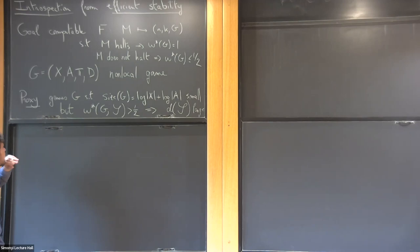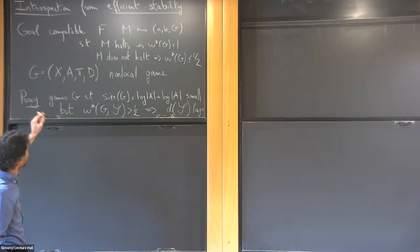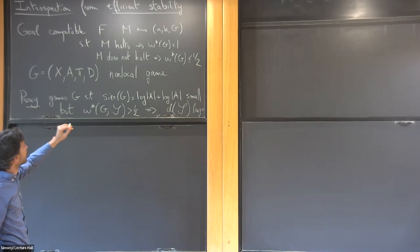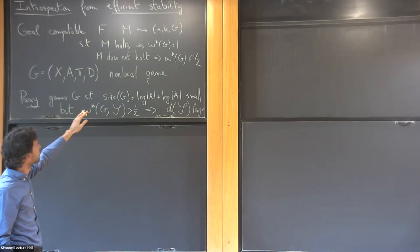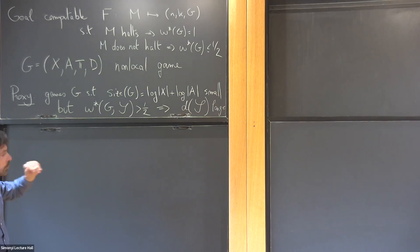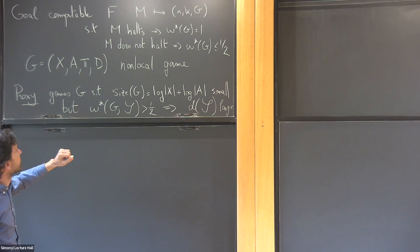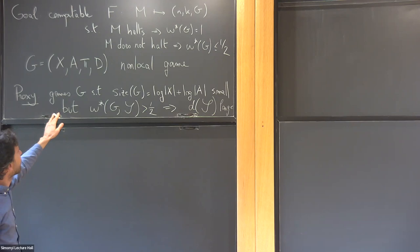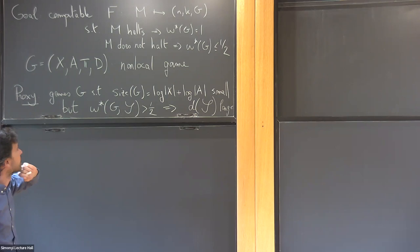If you remember from the end of the first lecture, the goal was to design a computable function — this function maps Turing machines to triples of integers n, k. This used to be a linear function, but last time we saw we're going to construct these linear functions as normal games, where k are parameters representing the number of questions and answers. This needs to be a reduction from the halting problem to deciding if this game has a quantum strategy that succeeds with probability one.